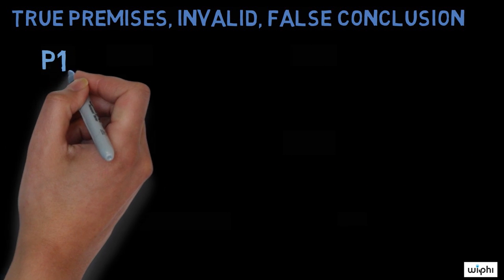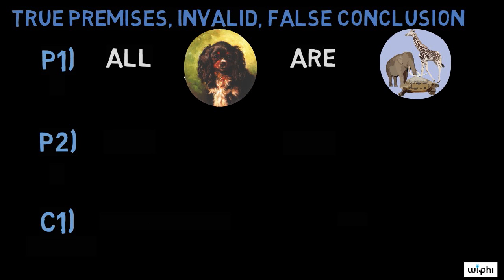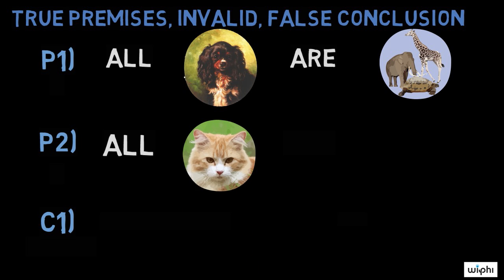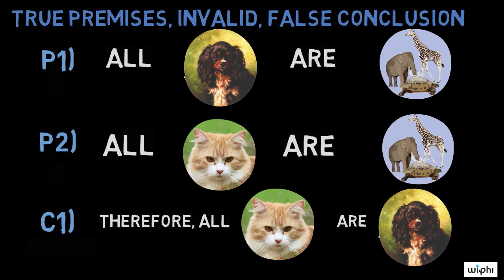Next is an example of an argument that has true premises, but is not valid. Premise one, all dogs are animals. Premise two, all cats are animals. Conclusion, therefore all cats are dogs.